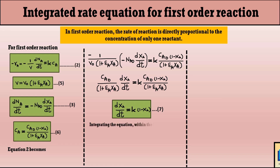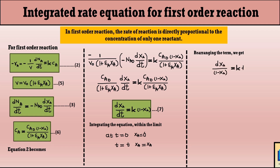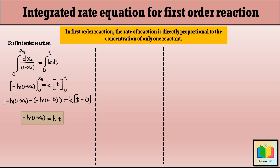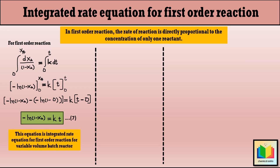Now let's integrate this equation with the limits: at T equals 0, X_A equals 0; and at T equals T, X_A equals X_A. Rearranging for integration: dX_A/(1 − X_A) equals K·dT. After integrating and applying the limits, we get: minus ln(1 − X_A) equals K·T. This is the integrated rate equation for the first-order reaction in a variable volume batch reactor.